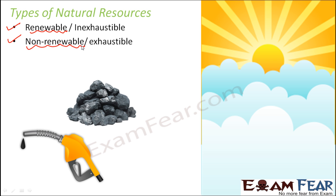Moreover, the next stock of coal to get formed is going to take millions of years. So it takes millions of years for the formation of coal, but to use that coal you just need a couple of minutes or a couple of hours. So the stock will get over in a period of time — these are called exhaustible resources. In this lesson, we are going to talk only about exhaustible resources.